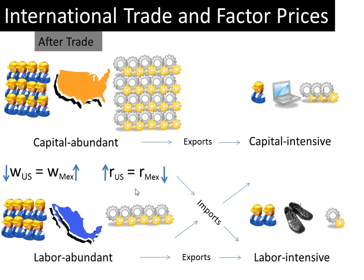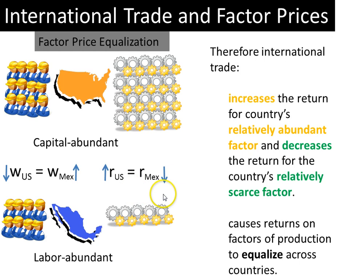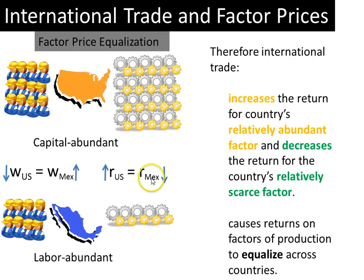This prediction — that international trade equalizes factor prices in the two countries — is known as the factor price equalization theorem. This is a startling and very important prediction made by theory. To recap: factor price equalization states that when two countries engage in trade, trade increases the return on a country's relatively abundant factor. In the U.S., the return on capital went up; in Mexico, the return on its abundant factor labor went up. But international trade decreases the return for the country's relatively scarce factor — in the U.S., wages of labor fell; in Mexico, the return to capital fell. As a result, the prices of factors of production equalize across countries.